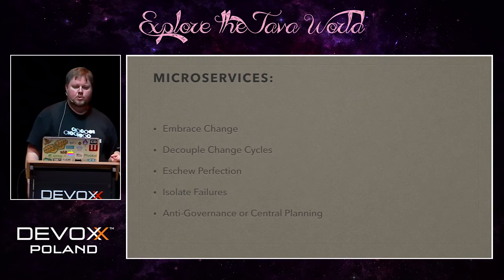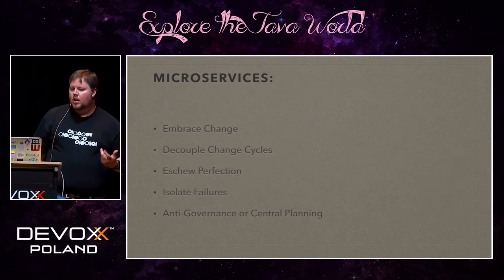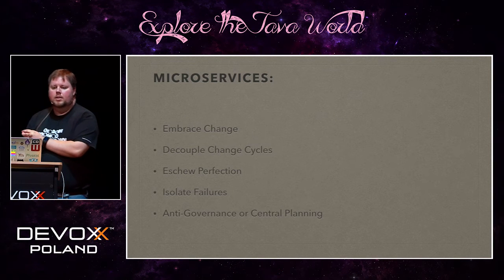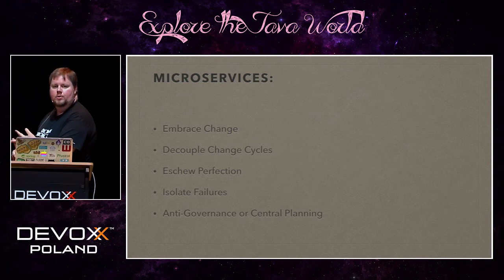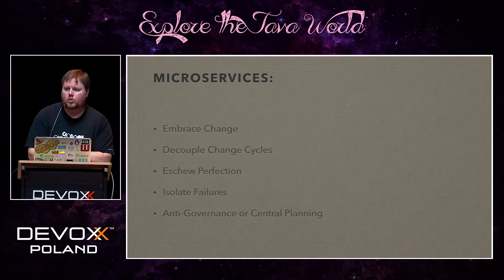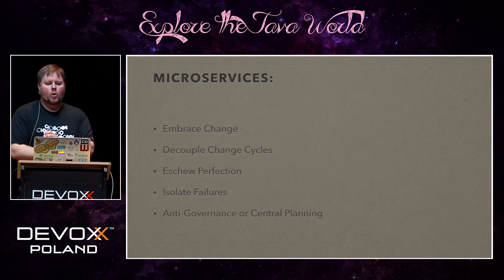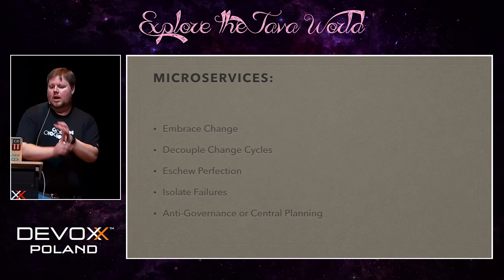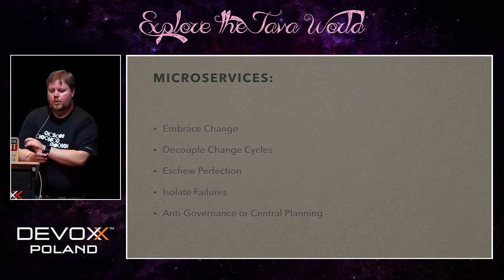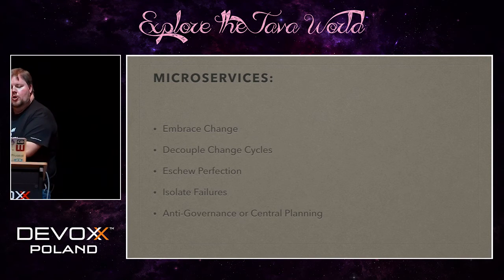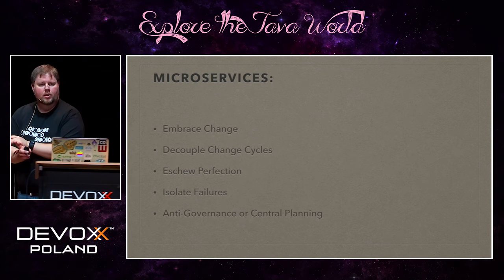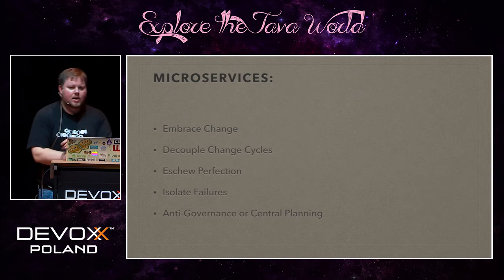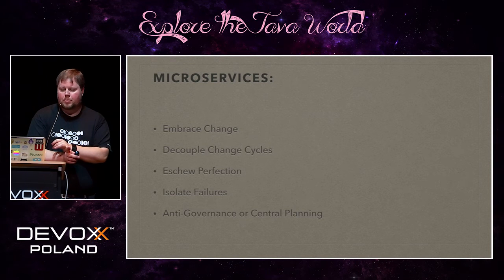Microservices definitely embrace change, they definitely help us decouple our change cycles. Because they're smaller and we can replace them whenever we want to, we don't have to make them perfect on day one. We can isolate failures into individual microservices. And in fact, we can start to get away from this notion of central planning — we can actually get by with a lot less governance than maybe we've tried to do in the past.